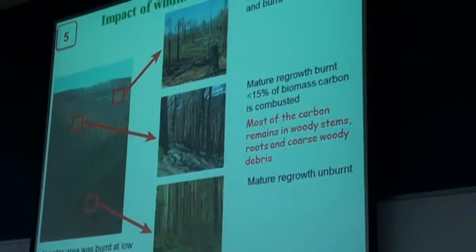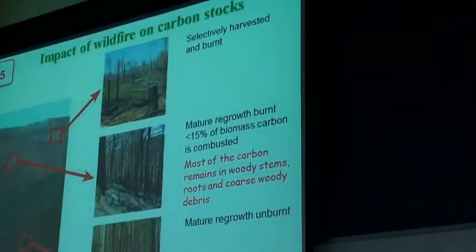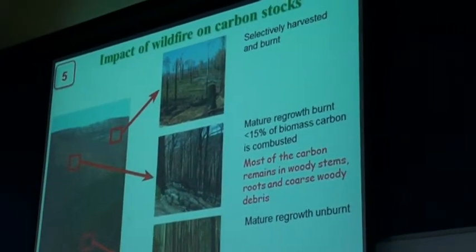Most of the carbon in the trees is still there after the forest is burnt. For mountain ash, many trees are killed where it's high severity fire. But not all the area burnt was high severity. More than half of the central highlands mountain ash forests was burnt at low severity, where most ash trees were not killed. Even if killed, most biomass remains on the site. In high severity burnt areas, between 9 and 14 percent of biomass carbon was lost.